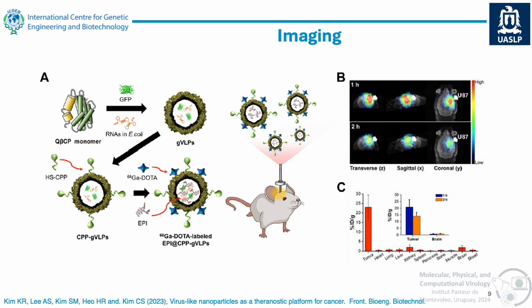Here they use Q-beta as a VLP. They added RNA and GFP, giving a mixture of fluorescent proteins and RNAs. They modified it selectively and intracranially inserted it into mouse brains. They saw that the tumor was extremely well localized — pretty much all of the particles localized exactly where the tumor was implanted, and not on the rest of the body.